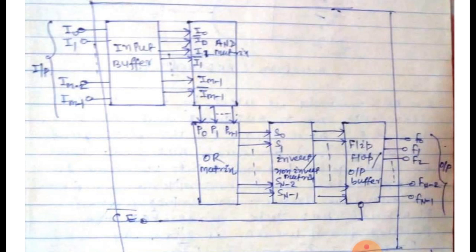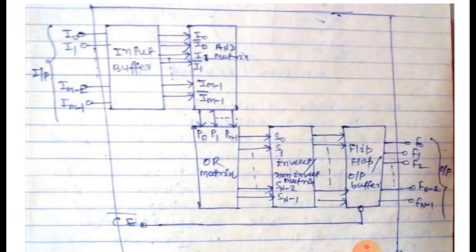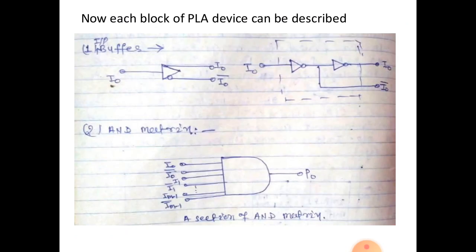Now explain each block diagram of PLA. First, input buffer. Example: I0 as an input gets two outputs I0 and I0 bar. Bubble indicates the complement form. That I0 input as gate I0 complement.